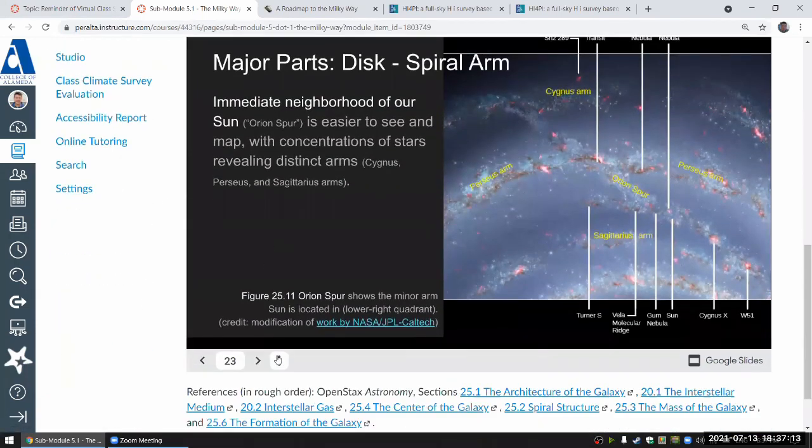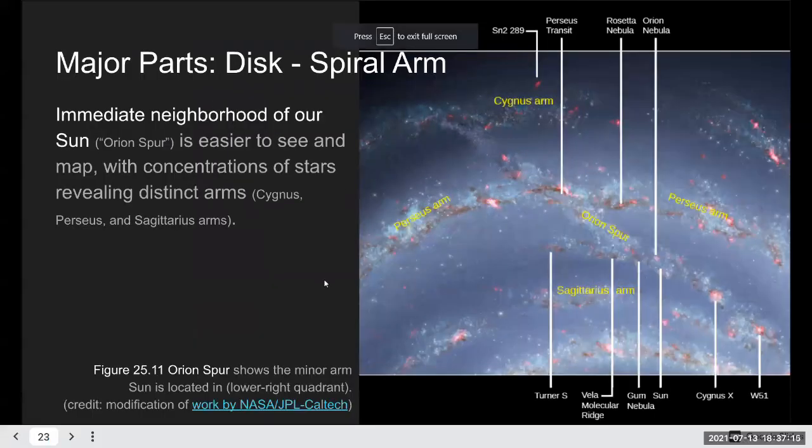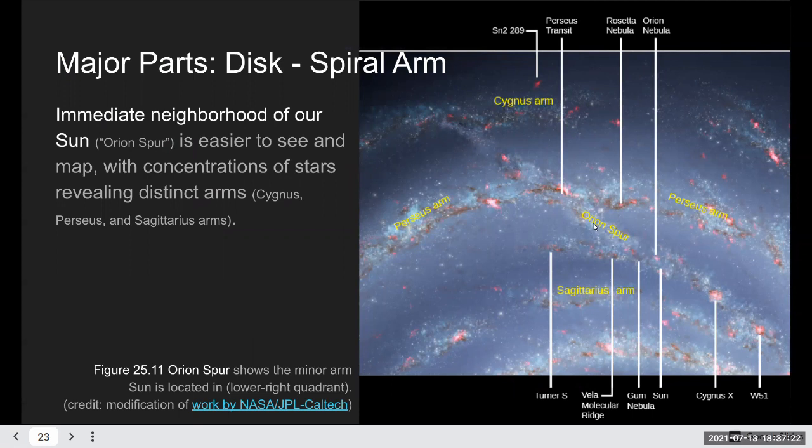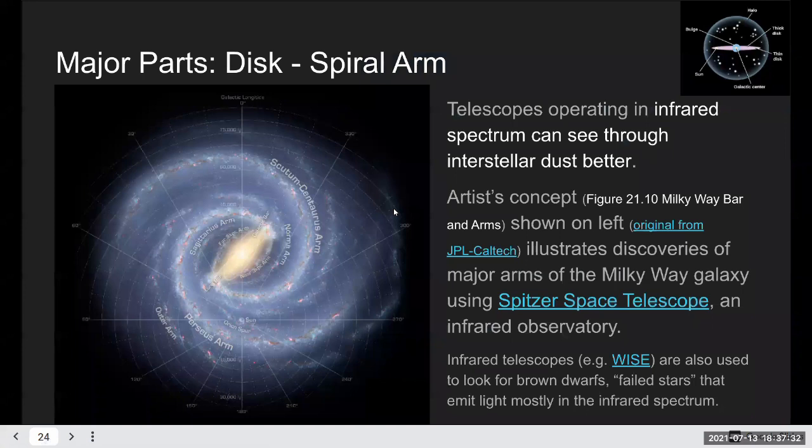Because this is what an artist imagined our galaxy might look like, not what it actually looks like based on data. But these images are useful in talking about the things that we do know. We do know the collection of stars that make up the Orion spur, the local region where the sun is at, and the nearby arms. Those are based on the stars that are actually measured.